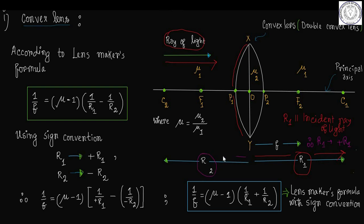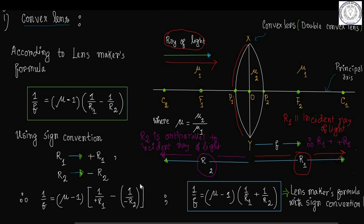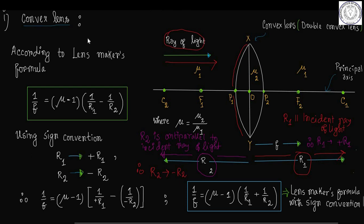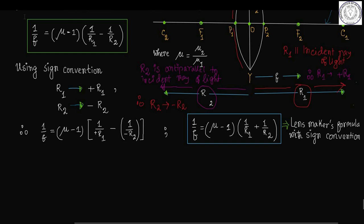Similarly, the radius of curvature of the second refracting surface XP2Y, that is R2, is measured towards the left, which is in the opposite direction of the incident ray of light. R2 is therefore measured anti-parallel to the incident ray, which is why R2 tends to minus R2, and the radius of curvature of the second surface is negative. Finally, we get the Lensmaker's formula with sign convention for a convex lens: 1 by f equals mu minus 1 into 1 by R1 plus 1 by R2.